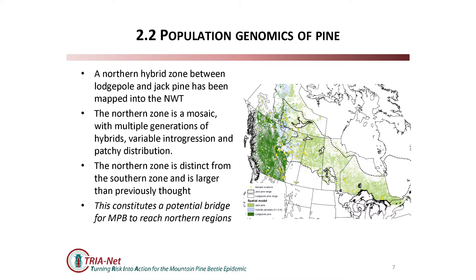The southern zone is also complex. The northern zone has a bit less jack pine in it, probably because the contact between the two species there is more recent than in the southern zone - it's a newer hybrid zone but fairly distinct with some different features, and probably larger than we previously thought. One management implication is that it potentially presents another bridge for the mountain pine beetle to reach northern regions under future climate suitability scenarios - though it has less jack pine, so it may be a less favorable off-ramp than the southern region.